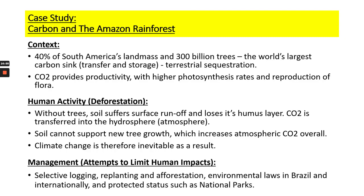There have been attempts to manage this in the Amazon specifically: selective logging laws, replanting and afforestation, environmental laws in Brazil and internationally such as the Paris Agreement 2015 and COP26, and designating areas as protected national parks. However, even with all this management in place, the Amazon rainforest is still depleting in tree stocks and therefore in its carbon sink totals, and could represent a great threat in future.